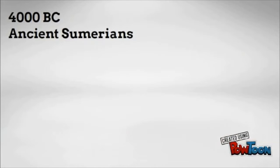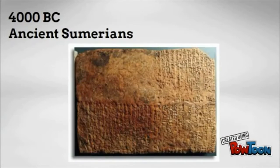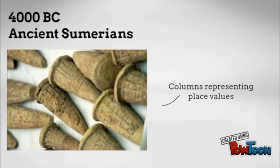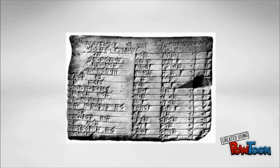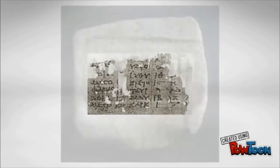They needed a way to keep track of trade and inventory, so they developed a counting system that used carvings, symbols, and columns representing place values. Other civilizations invented their own symbols for numbers as time went on.